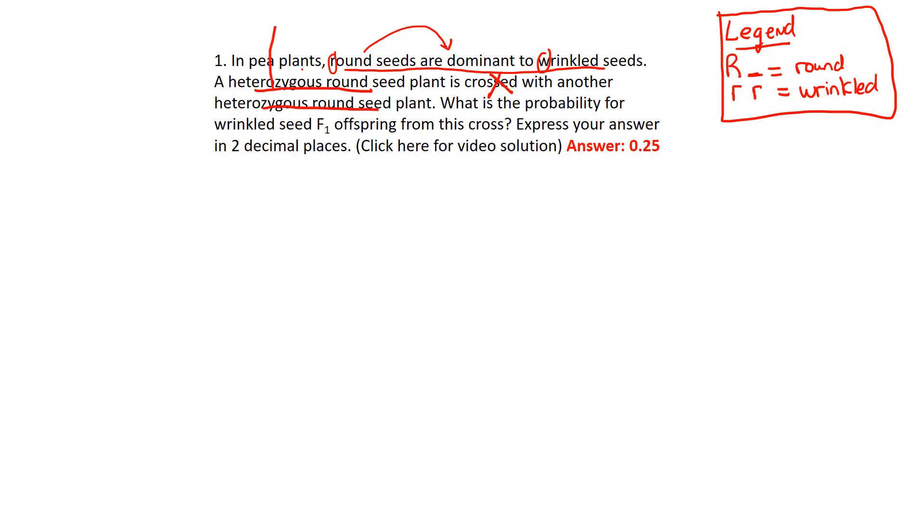If it's hetero, that means both those alleles are different. Hetero is the prefix for different. So we know one of them has to be an R, and there are only two alleles for this particular trait, so the other one would have to be a little r. That's hetero, two alleles being different. The other one is also the same, so we can put that one down here. And that is step two, underline the parents, tell me their genotypes.